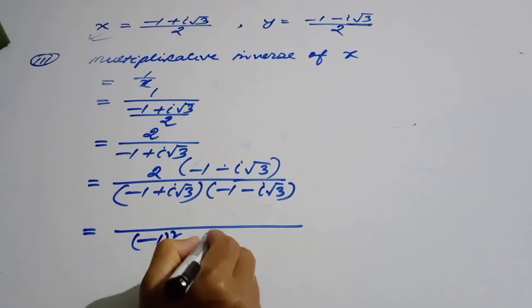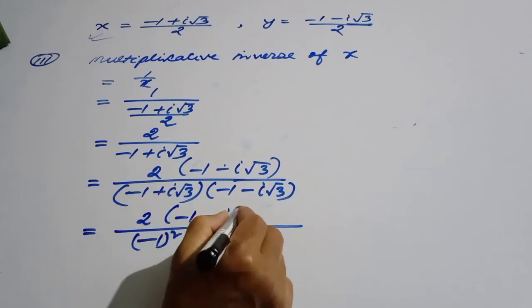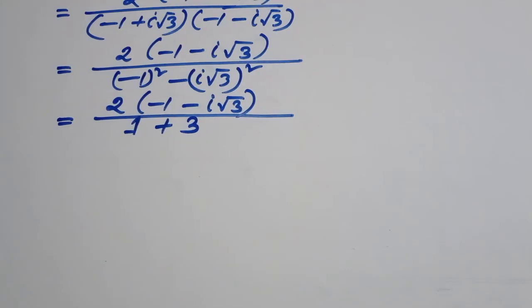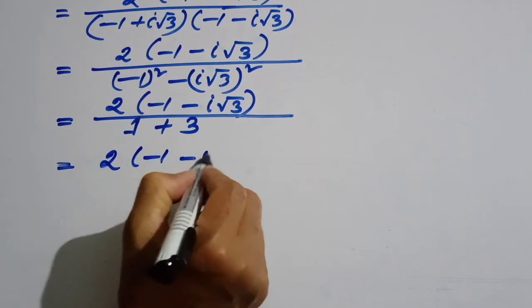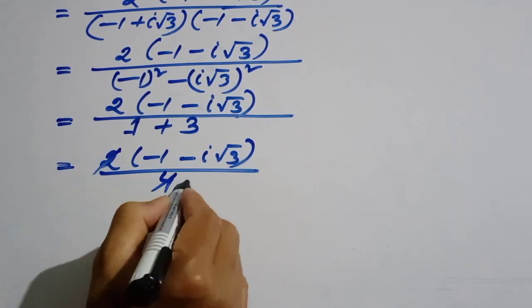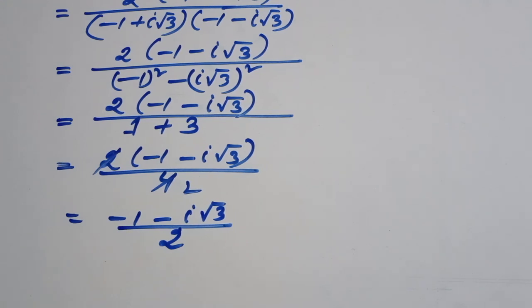Minus 1 whole square, i root 3 whole square. Minus 1 minus i root 3. What do you want to come on? Minus 1 is the minus, this divided by 2. Minus 1 minus i. 1 plus 3. This is equal to 4. 4 is cancelled. This divided by 2.